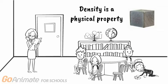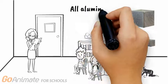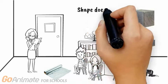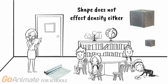Density is also a physical property. This is because density is a characteristic of aluminum. Aluminum has the same density no matter how big or small, just like it has the same silver color no matter how big or small it is. Shape does not matter either. The aluminum foil will have the same density as the two cubes. The physical properties do not change — they are characteristics of aluminum.